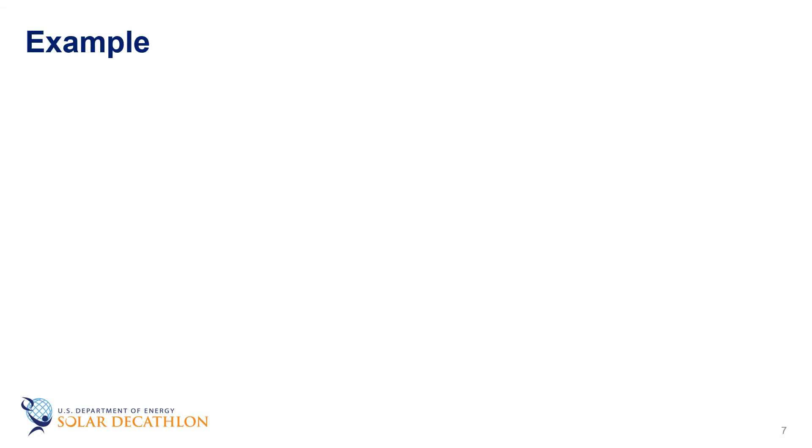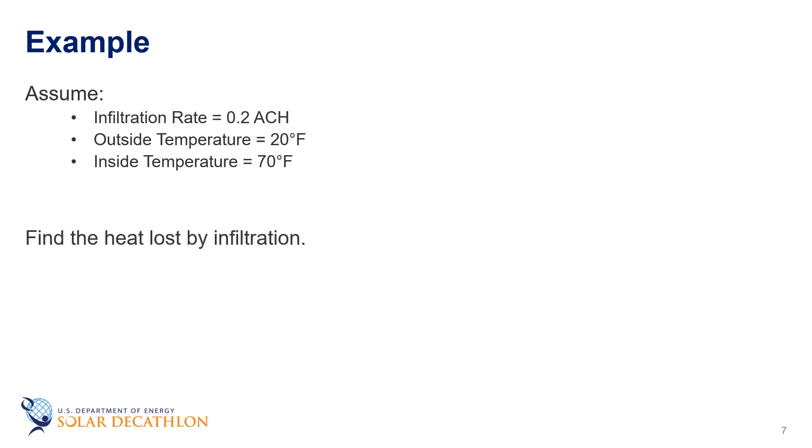Now, let's look at another example. For a building that has a leakage rate of 0.2 air changes per hour, the outside temperature is 20 degrees Fahrenheit and the inside temperature is 70 degrees Fahrenheit, let's find the heat lost by infiltration. Note that we generically call it infiltration, but it's really the amount of energy required to heat the infiltration air or the amount of heat lost by exfiltration. And let's say that the building contains a volume of 10,000 cubic feet.